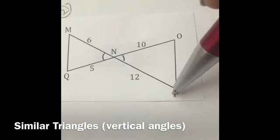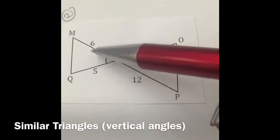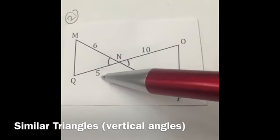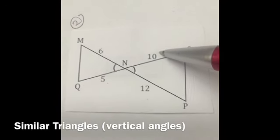Another way that I can tell is that this is the largest side for this triangle, this is a smaller side. In this triangle it's flipped—this is the larger side and this is the smallest side.